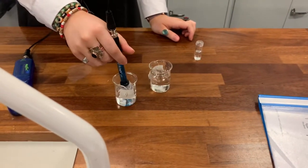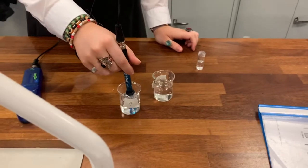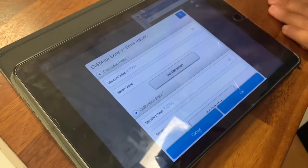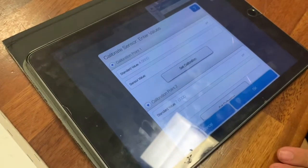And then whenever it's on that, then on your iPad I want you to hit Set Calibration. Okay, then scroll down in your iPad where it says standard value - can you change that to say 9.000?